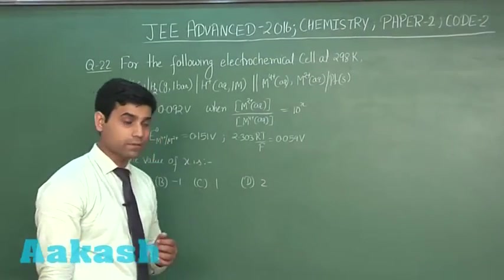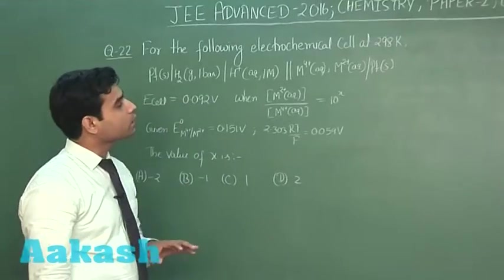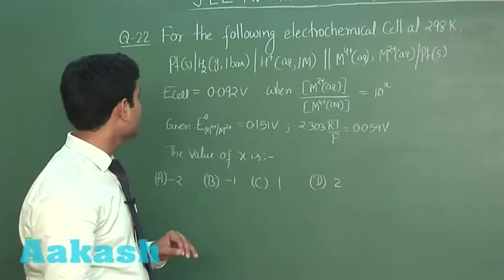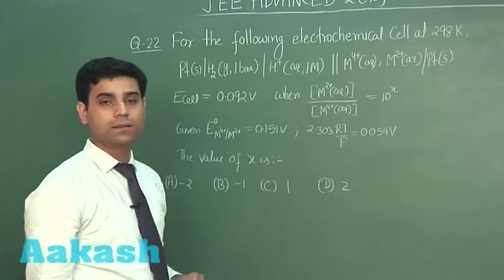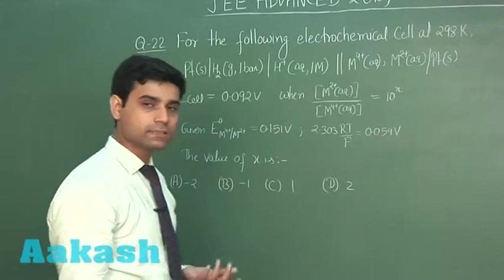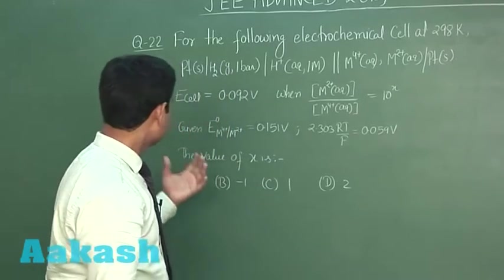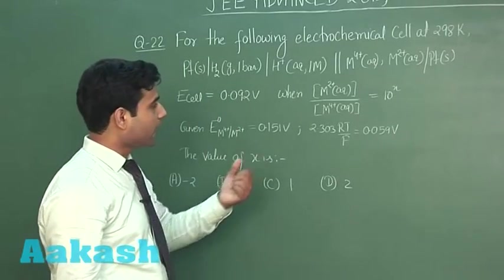So, this is the next question we have. For the following electrochemical cell at 298 Kelvin, the electrochemical cell is given - hydrogen and metal 4 plus, metal 2 plus ions are there in the cell. E cell is also given and the concentration ratio is given 10 to the power x.